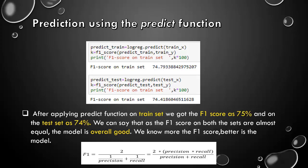The formula for F1: F1 equals 2 by 1 by precision plus 1 by recall. What's precision? It is defined as, out of all the positive predictions, how many are actually positive? And what is recall? It defines as, out of all the actual positive, how many are predicted positive?